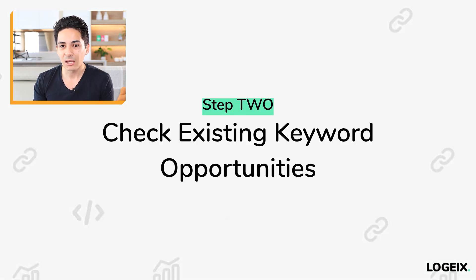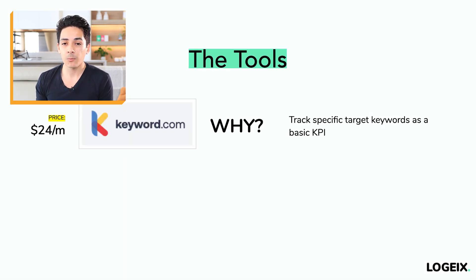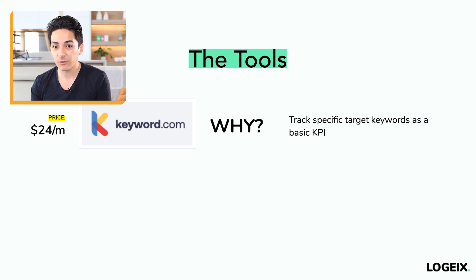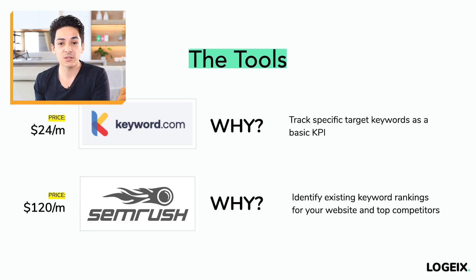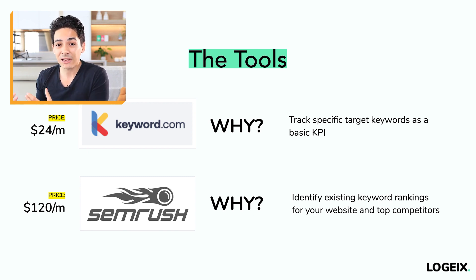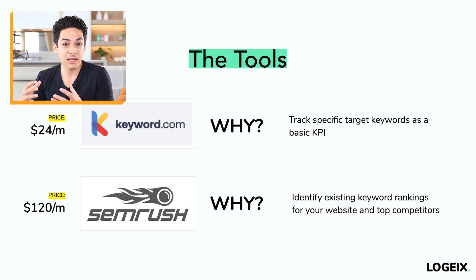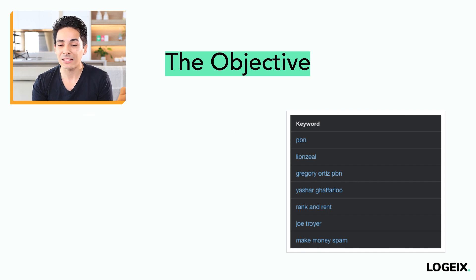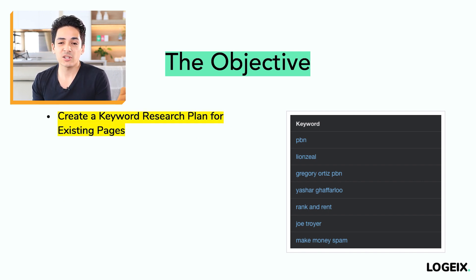Step number two is to check existing keyword opportunities, and I'm presuming you already have an existing website in place. You're going to need a rank tracker like keyword.com to track specific keywords — search phrases you're interested in ranking for. You'll also want a tool like SEMrush or Ahrefs, which allows you to identify your existing keyword rankings and your competitors' rankings, so you can see what keywords they're ranking for, how many people search for them monthly, and what position they hold.